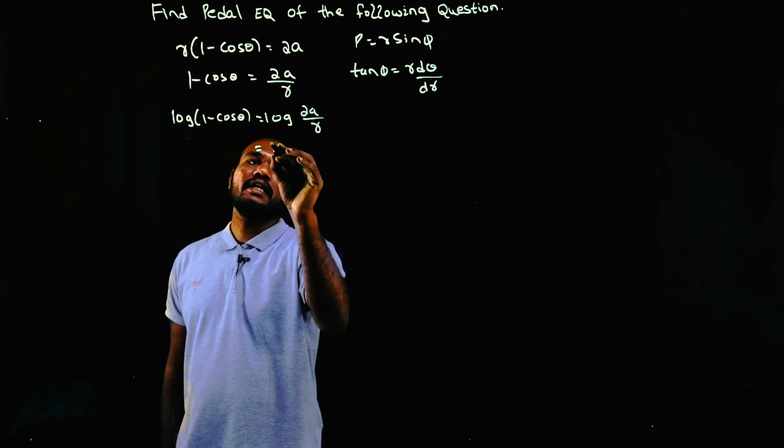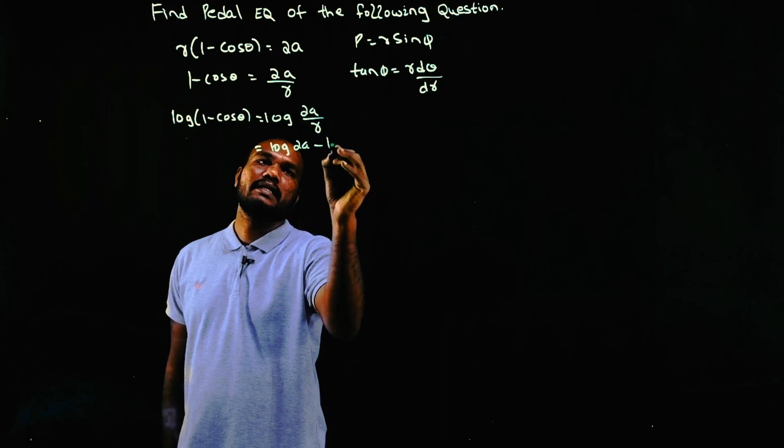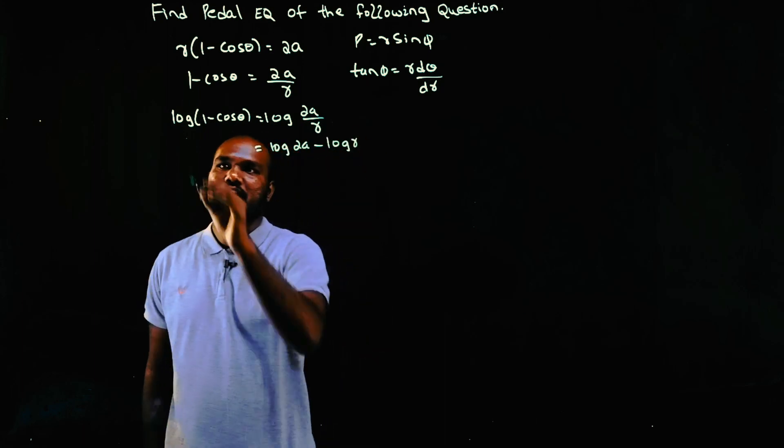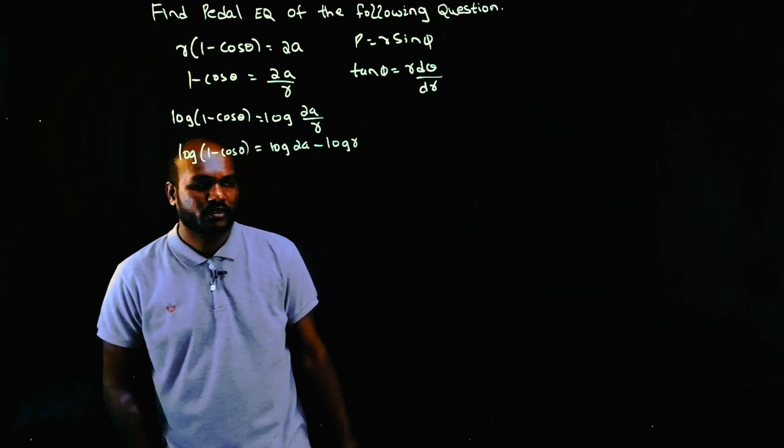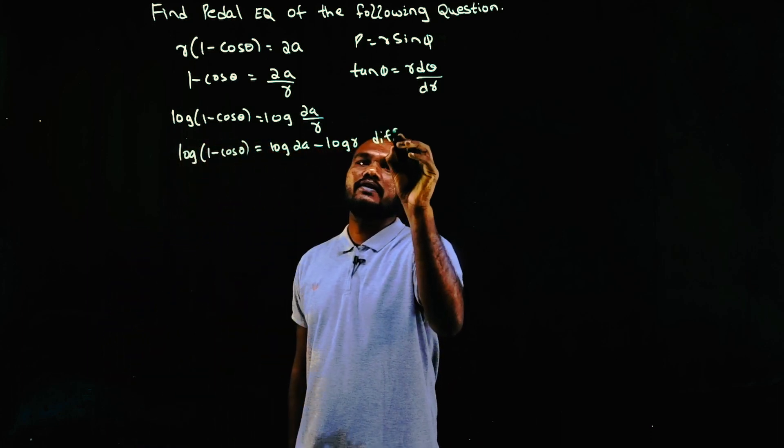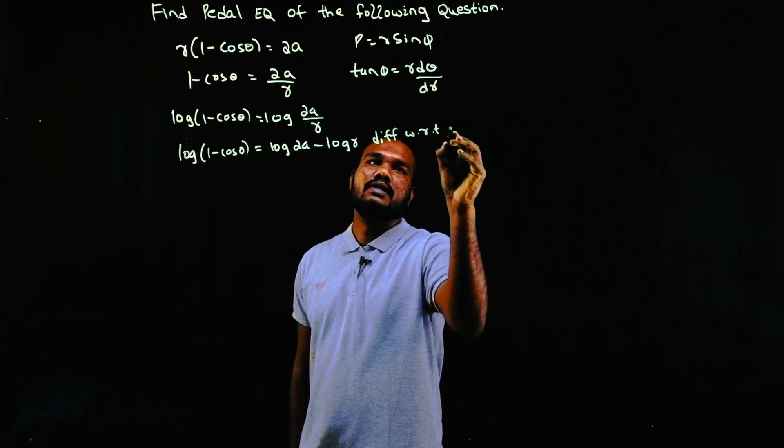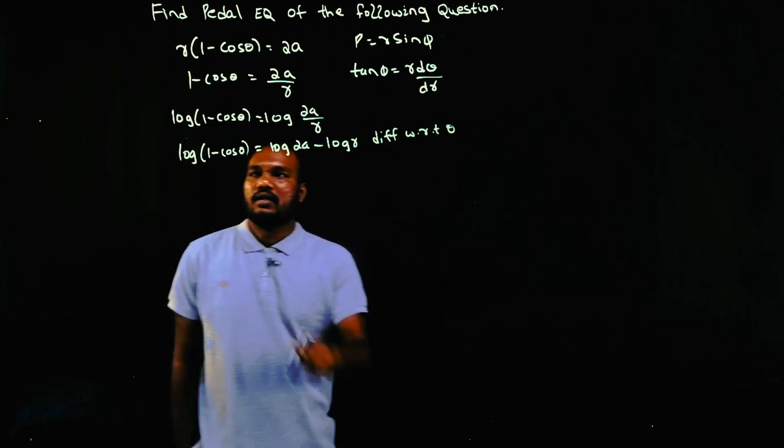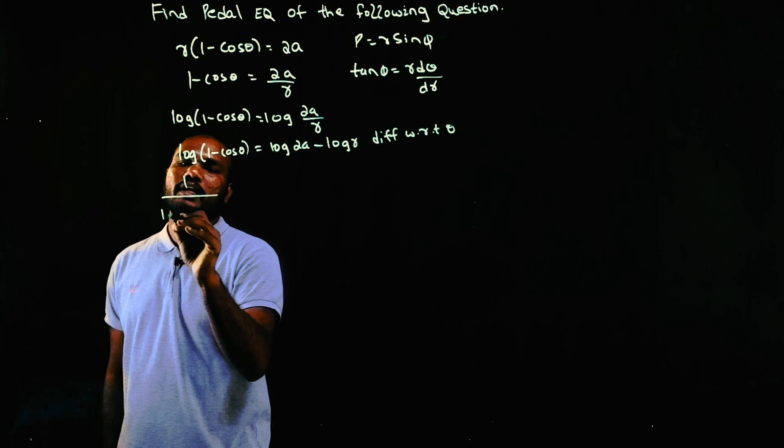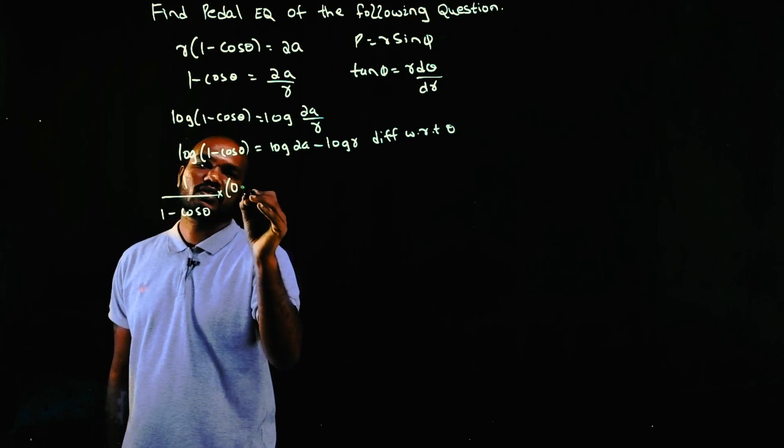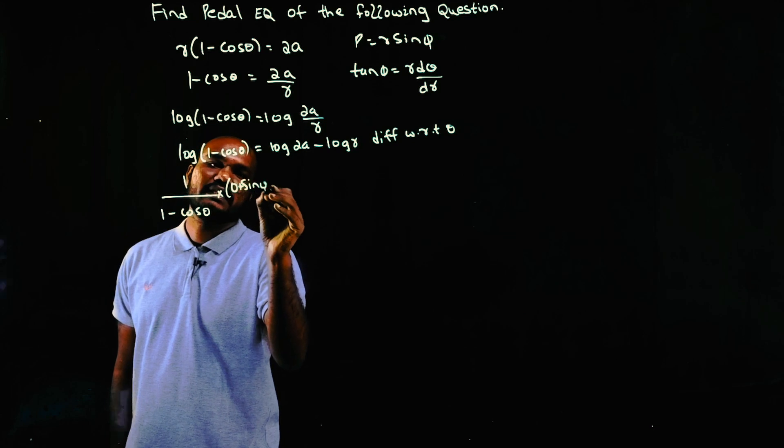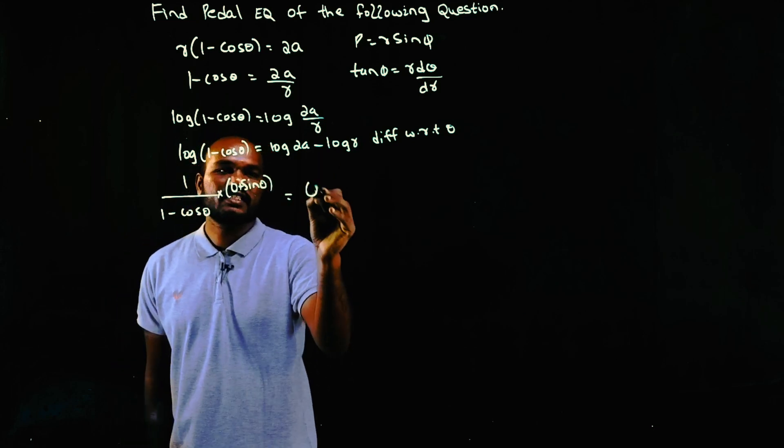There is a property: log(a/b) = log a - log b. So log is done. What we need to do is differentiate with respect to θ. The differentiation of log of something is 1/(1 - cos θ) times the differentiation of (1 - cos θ), which is sin θ. On the right side: log 2a differentiation is 0, minus log r differentiation is (1/r)(dr/dθ).